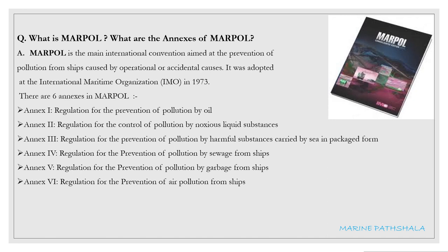Annex 1: Regulation for the prevention of pollution by oil. Annex 2: Regulation for the control of pollution by noxious liquid substances. Annex 3: Regulation for the prevention of pollution by harmful substances carried by sea in packaged form. Annex 4: Regulation for the prevention of pollution by sewage from ships. Annex 5: Regulation for the prevention of pollution by garbage from ships. Annex 6: Regulation for the prevention of air pollution from ships.